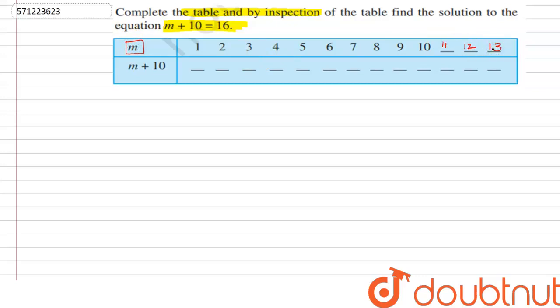Now we have to fill what is m + 10. m + 10 is nothing but 10 + 1, which equals 11. Then 10 + 2 = 12, 10 + 3 = 13, 10 + 4 = 14, 10 + 5 = 15, and 10 + 6 = 16.